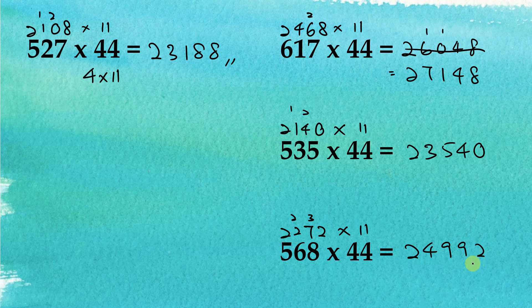That's how we multiply two-digit, three-digit, or even four- and five-digit numbers by 22, 33, 44, and so on. The trick is to separate these multipliers into a single digit and 11, so we can use the easy multiplication-by-11 technique, making the overall calculations simple.